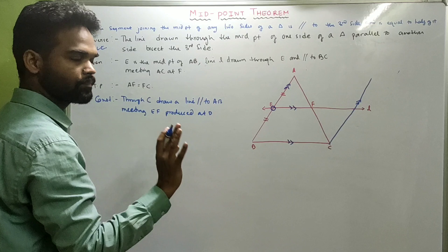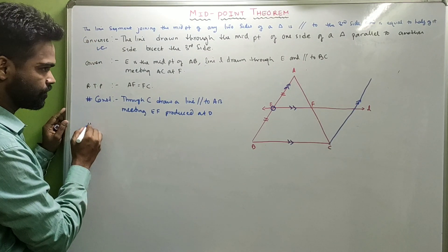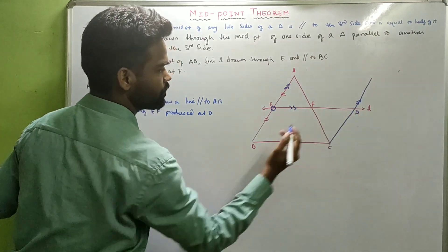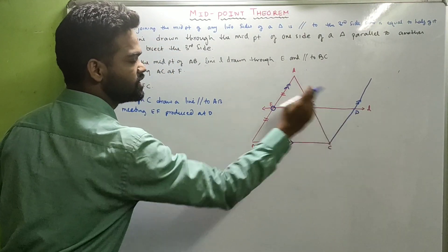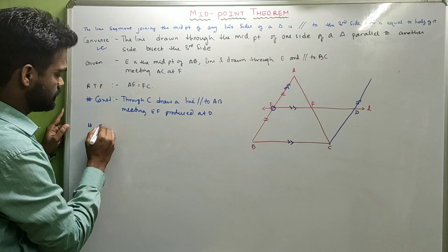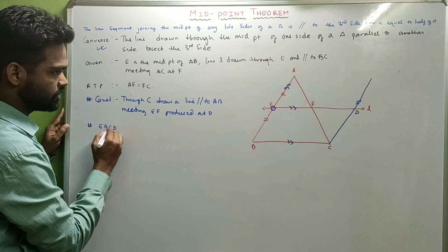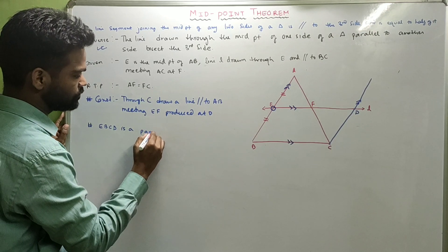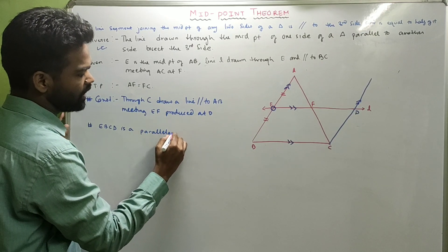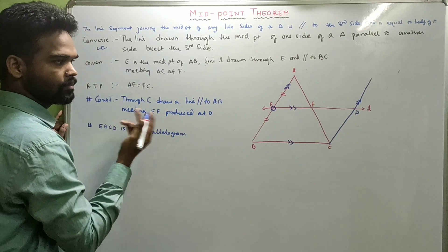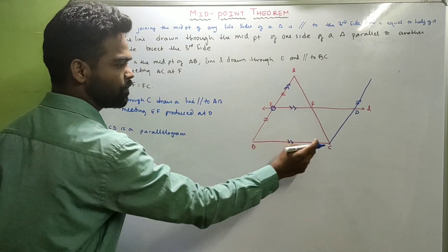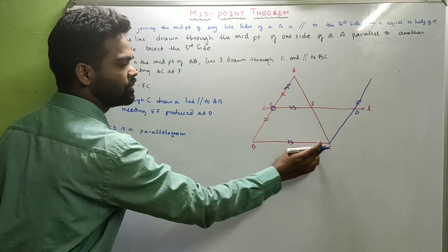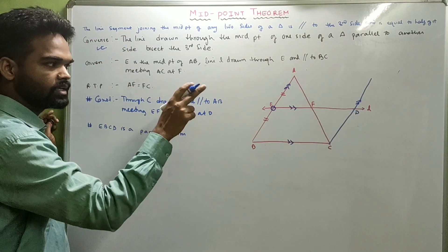Now, quadrilateral EBCD is a parallelogram. Why? Because EB is parallel to CD by construction, and ED is already parallel to BC as it was given to us. Hence it is a parallelogram.